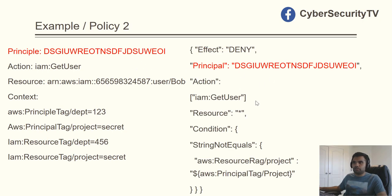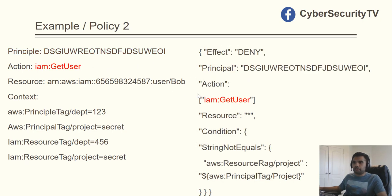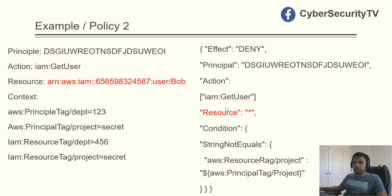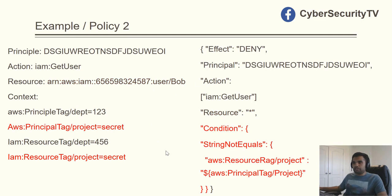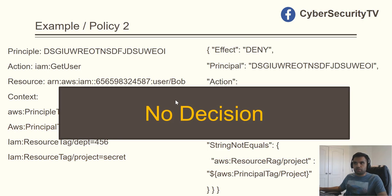Policy four has effect Deny. We match the principal — yes, it matches. We match the action GetUser — yes, it matches. Resource star is broader than the specific user resource — that matches. Now the condition: StringNotEquals resource tag project and principal tag project — if these are NOT equal, deny. But in our context, both resource tag and principal tag are the same value 'secret', so the condition is NOT triggered. This policy is not applicable, and no decision is made.